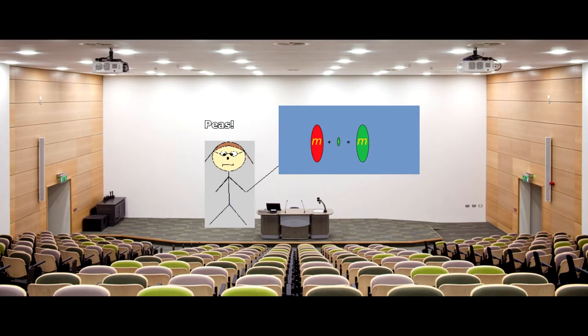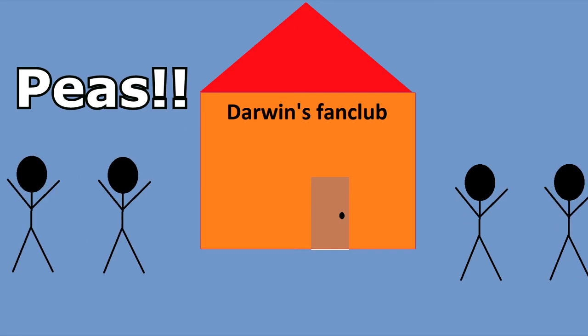Then around the 1900s, his theory became more understood, even by Darwinians. Not Darwin himself, as he died in 1882.